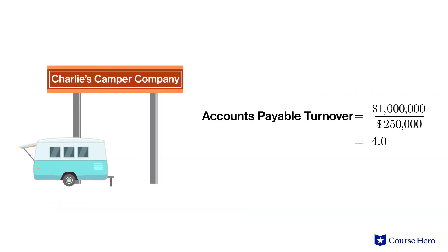For example, Charlie's Camper Company has made purchases from its suppliers on credit totaling one million dollars, and its average accounts payable balance is two hundred and fifty thousand dollars. Their accounts payable turnover ratio will be four, which means that on average their accounts payable is paid in full four times per year.